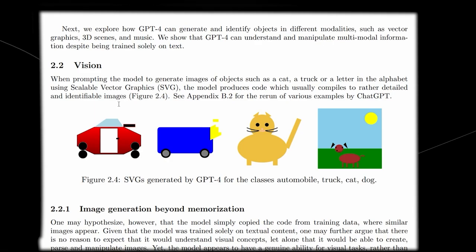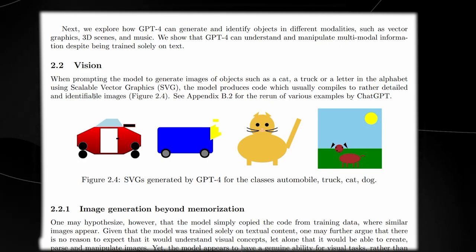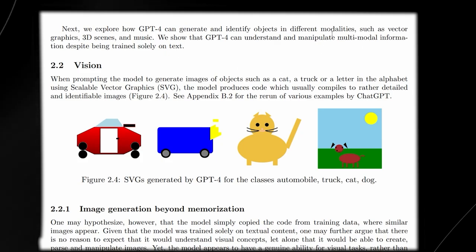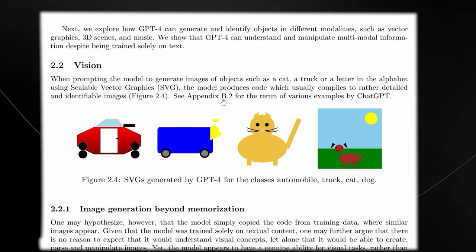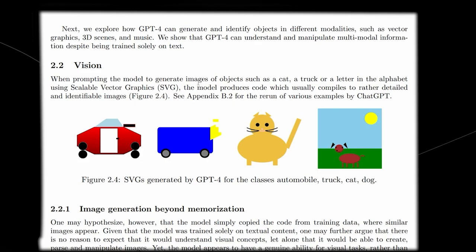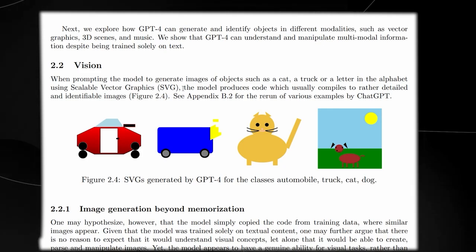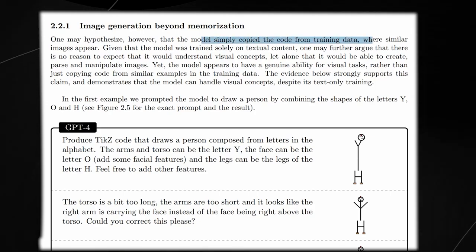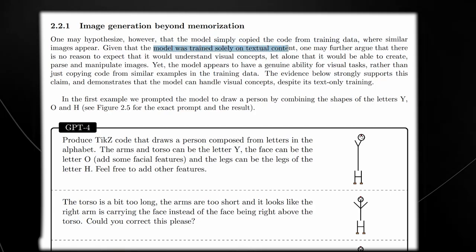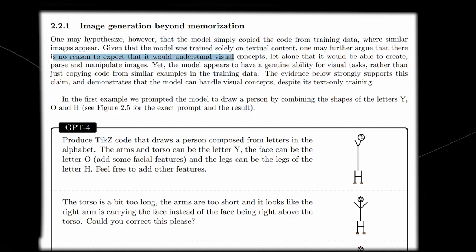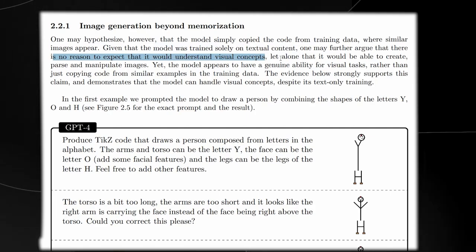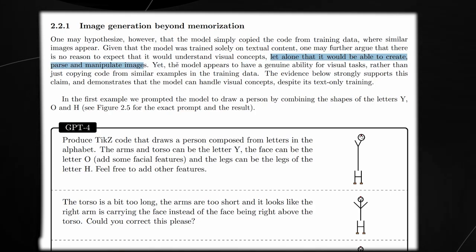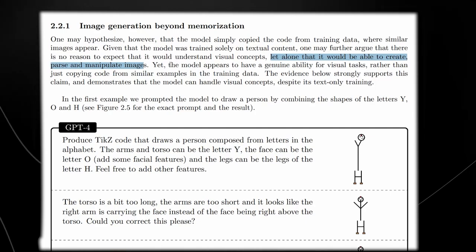GPT-4 is able to construct images even though it hasn't been trained on them, which is honestly pretty mind-blowing. You've just trained it on a large piece of language. It's a large language model, not something like Midjourney, not something like DALL-E, not something like Stable Diffusion. Although these are only SVGs, it just goes to show how far ChatGPT and GPT-4 are when it comes to being able to present data.